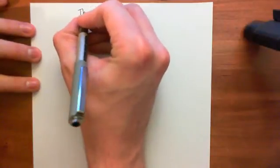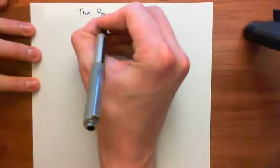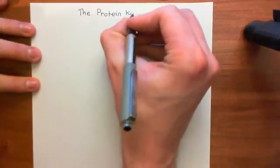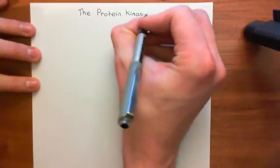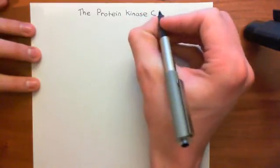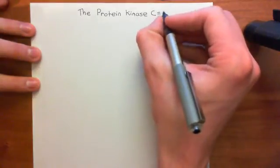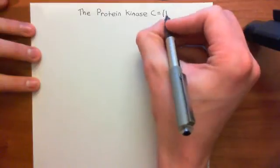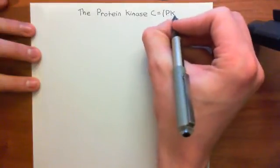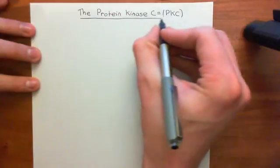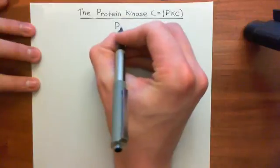Welcome to this video. In this video, we're going to discuss the protein kinase C pathway - specifically how you can activate the protein kinase enzyme, protein kinase C. As we'll see towards the end, there is not just one protein kinase C enzyme; there are many different protein kinase C enzymes. Protein kinase C is often abbreviated to PKC: P for protein, K for kinase, and C for C.